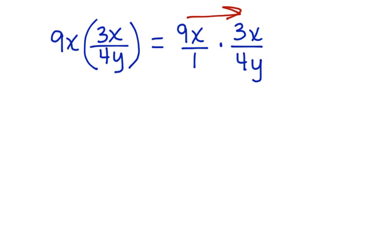Next we multiply across. 9x times 3x gives us 27x squared. 1 times 4y gives us 4y.